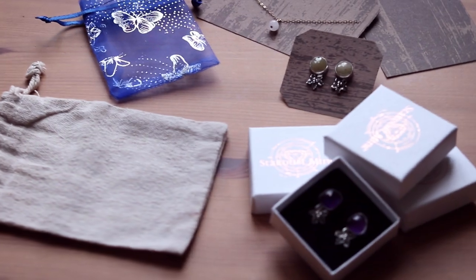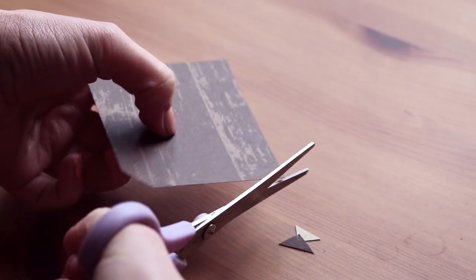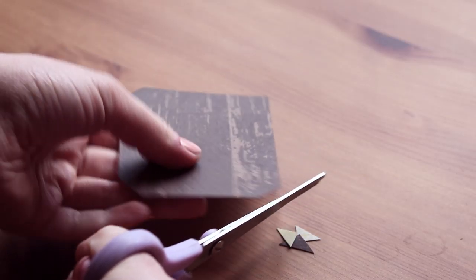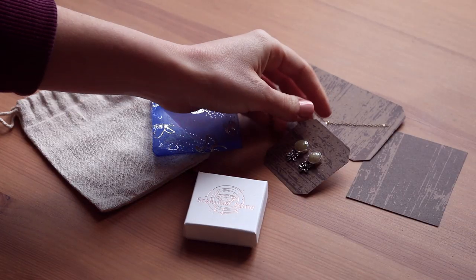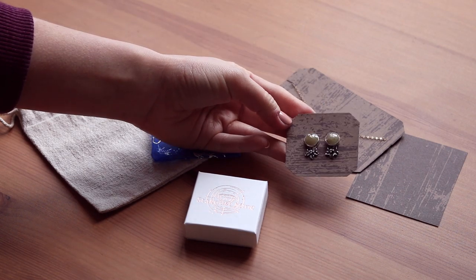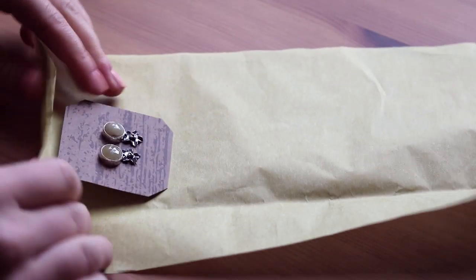Now let's move on to the actual packaging inside the box. There are many ways to package your jewelry. You can use pretty cards and cut them to size to display earrings or necklaces, which you can then wrap in tissue paper.